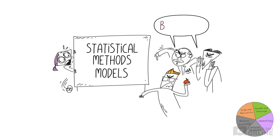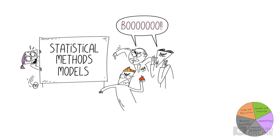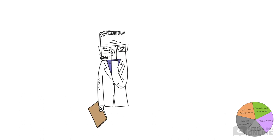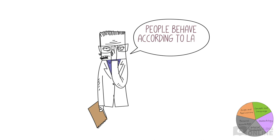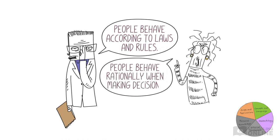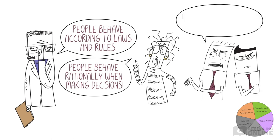These methods weren't always popular in the human sciences. In the past, many studies relied on assumptions when explaining human behaviour. For instance, psychologists often assumed that people behaved according to laws and rules, while many economists assumed that people behave rationally when making decisions. Of course, we now know that isn't the case.